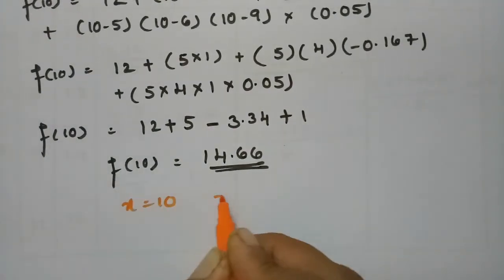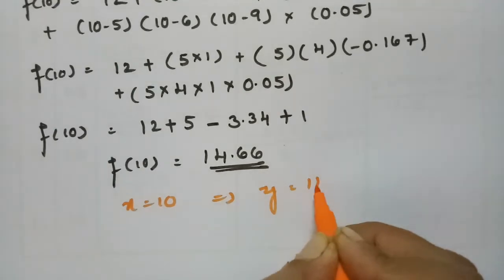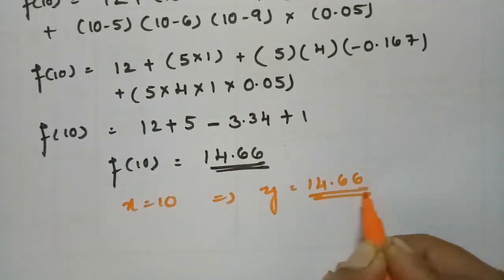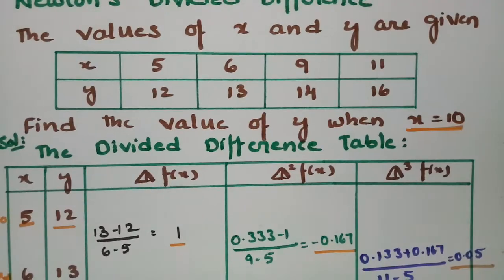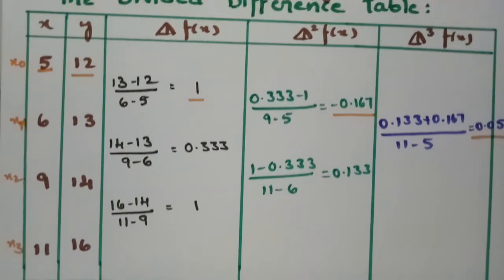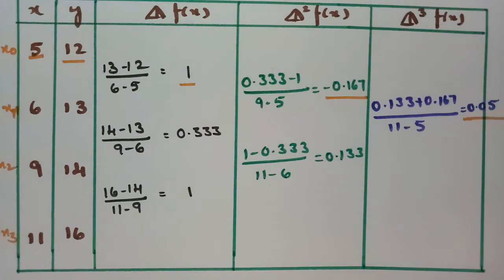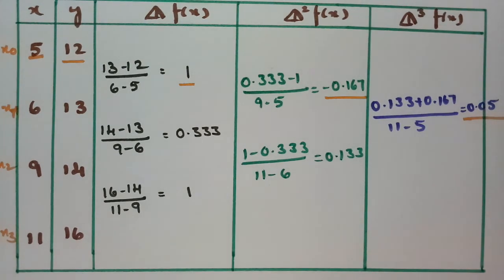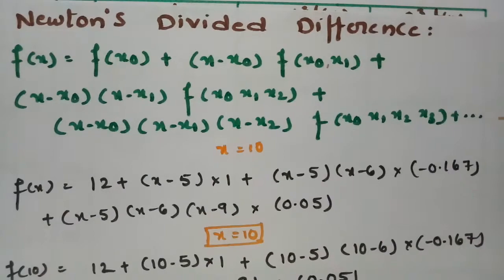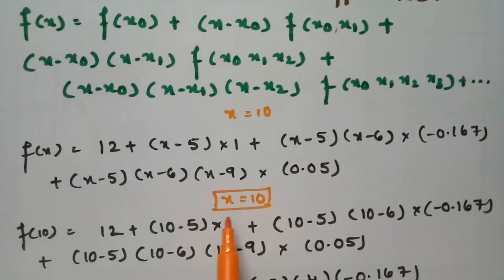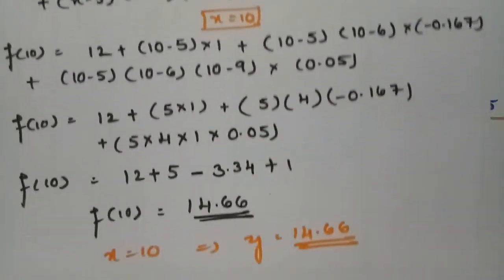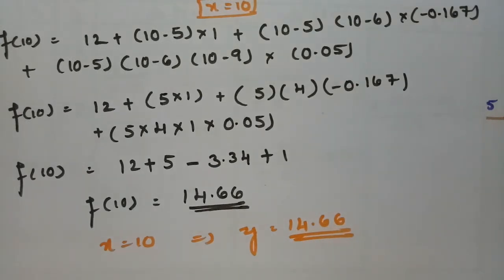When x is equal to 10, we got the corresponding y value as 14.66 using the Newton divided difference formula. First we create the divided difference table, then substitute into the formula. If you understand this, please practice and share it. Thank you so much.